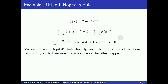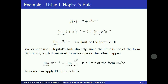Therefore, x squared e to the minus x is a limit of the form infinity times 0. This is an indeterminate form, and the value of the limit could be anything — it's not necessarily 0 or infinity. We cannot use L'Hôpital's rule directly since the limit is not of the form 0 over 0 or infinity over infinity, but we need to make one or the other happen.